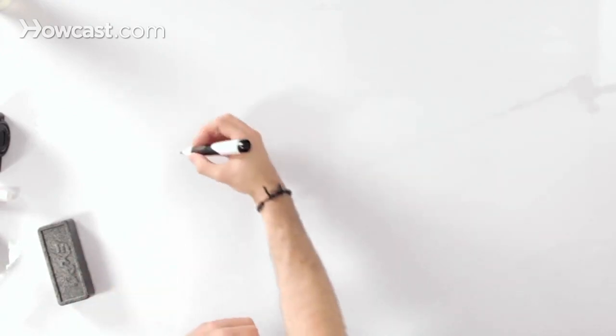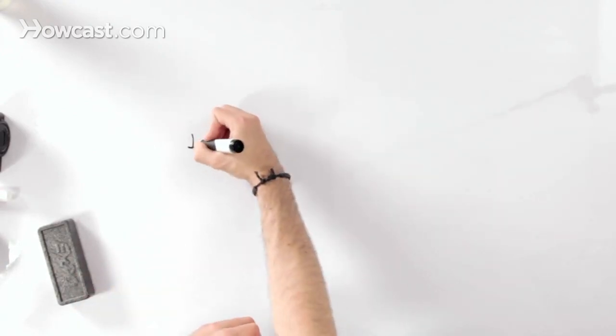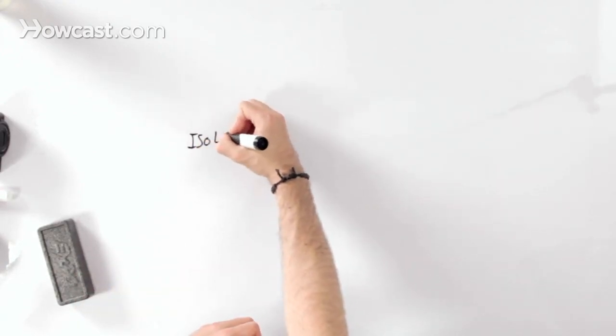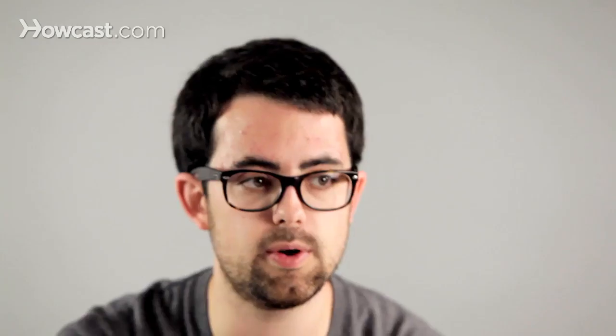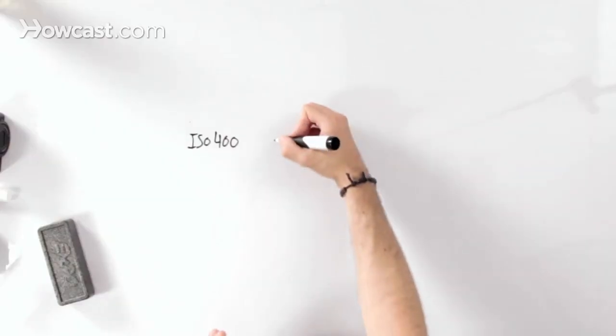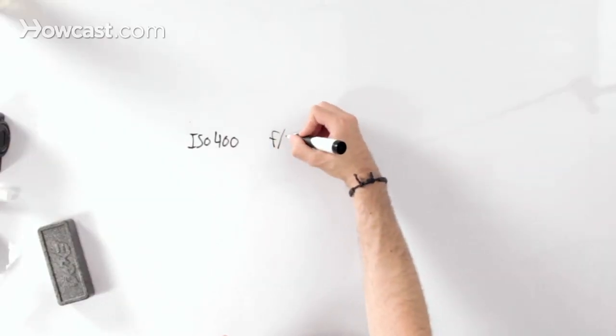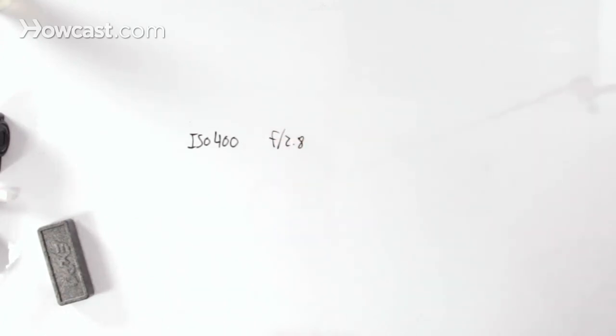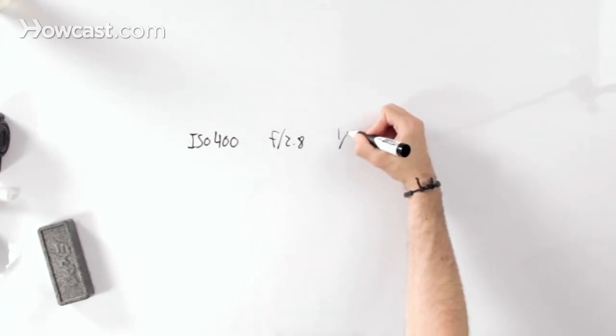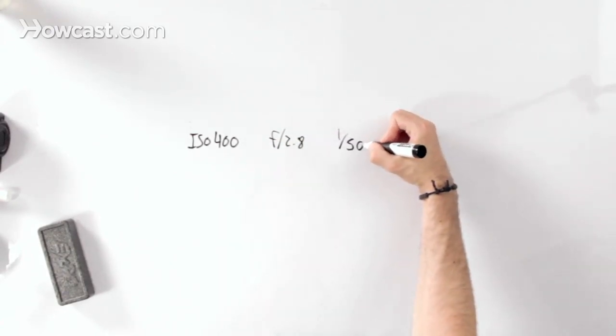If we're shooting at an ISO of 400, which is a very standard ISO — it was a very popular film speed back in the day before digital, and these days it's a very popular outdoor ISO — let's say you're shooting at f/2.8, so a very open amount of space in your lens with a lot of light coming in, and you're shooting at one five-hundredth of a second. That's the correct exposure.